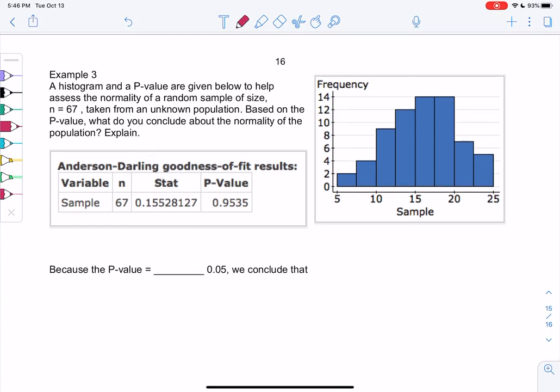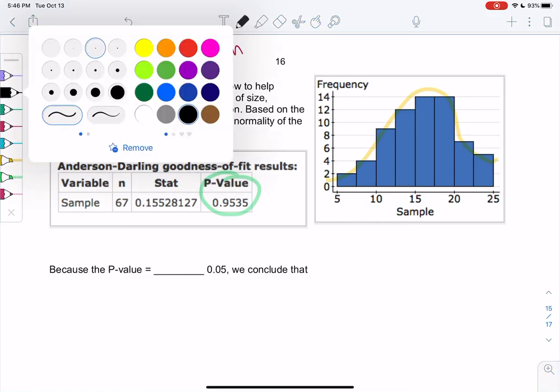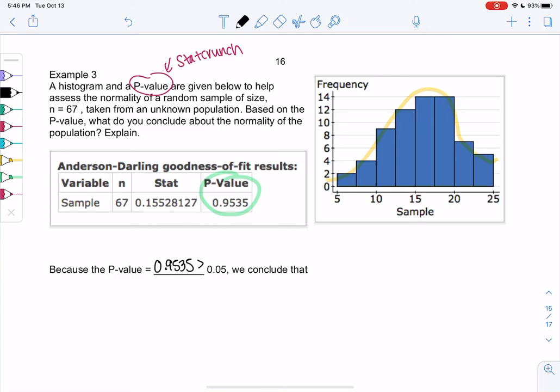Example 3: we have a histogram and p-value. I got the p-value from StatCrunch. They're given below to help assess normality of a random sample of size 67, which is big enough, taken from an unknown population. Based on the p-value, what do you think about normality? I'm not going to use the graph anymore. The graph does look a little bell-shaped to me, not so great, but a little bit. But the p-value is like the formal way of checking. P-value is done on technology computers. I get a p-value of 0.9535. Is that bigger than my cutoff? Yeah, it definitely could be normal. There's like a 95% chance we would see these differences if we had a normal curve. So yeah, we conclude that there is a reasonable possibility.